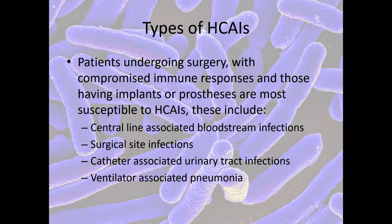Some patients are more prone to healthcare-associated infections than others. Those undergoing surgery, patients with compromised immune responses — perhaps older people or children — and those having implants or prostheses are the most susceptible. The four infection types discussed in the paper are central line-associated bloodstream infections, surgical site infections, catheter-associated urinary tract infections, and ventilator-associated pneumonia.